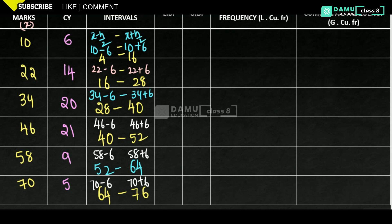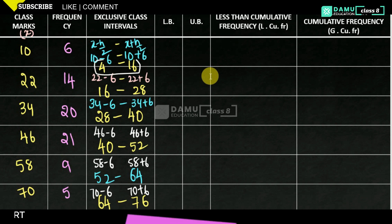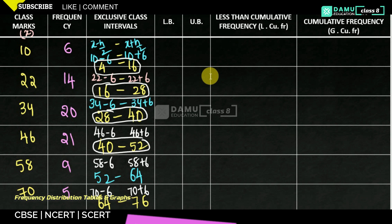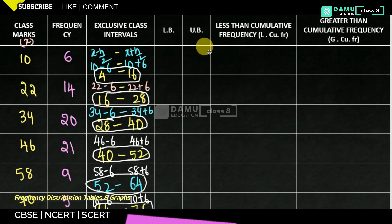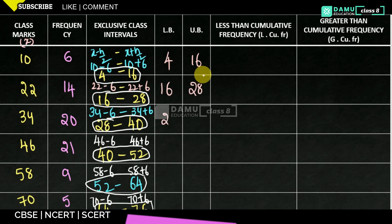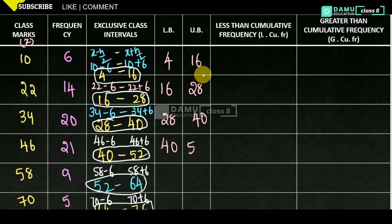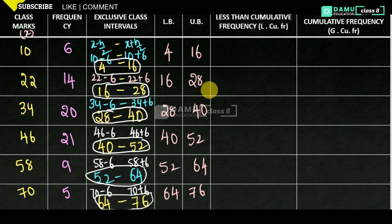So the class intervals are: 4–16, 16–28, 28–40, 40–52, 52–64, 64–76. In exclusive class intervals, lower limits and upper limits equal lower boundaries and upper boundaries respectively, corresponding to each other. Then for less-than cumulative frequency: write the first frequency value 6 as it is, adding from top to bottom.